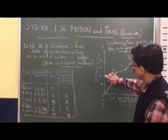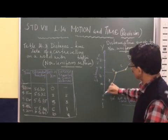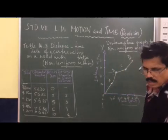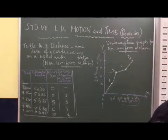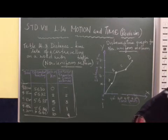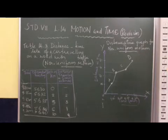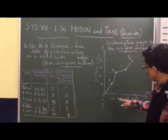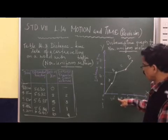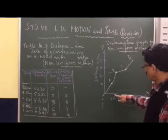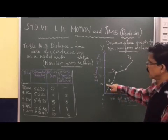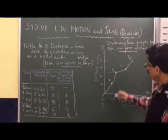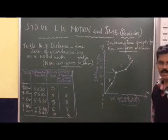The graph indicates the motion in a different manner. The time is written on the x-axis. In this graph, you will never get a straight line, because at different intervals of time — 9:05, 9:10, 9:15, 9:20 — the body traveled different distances.